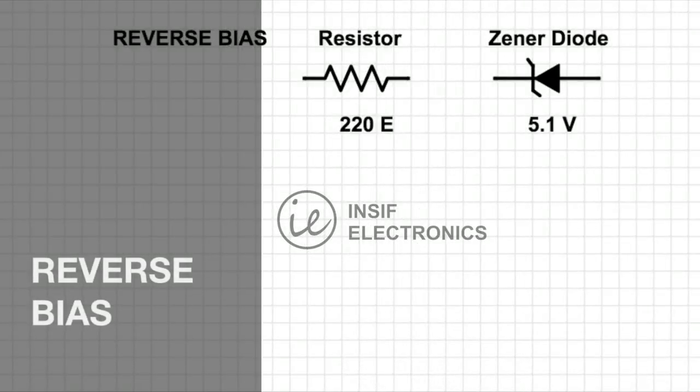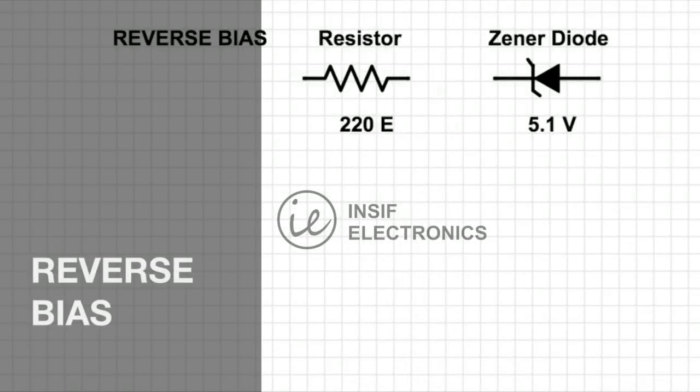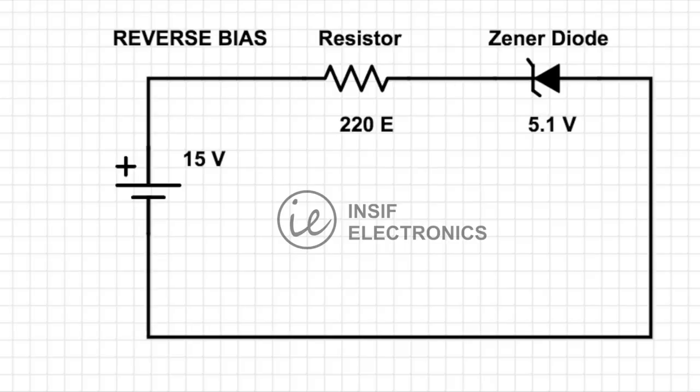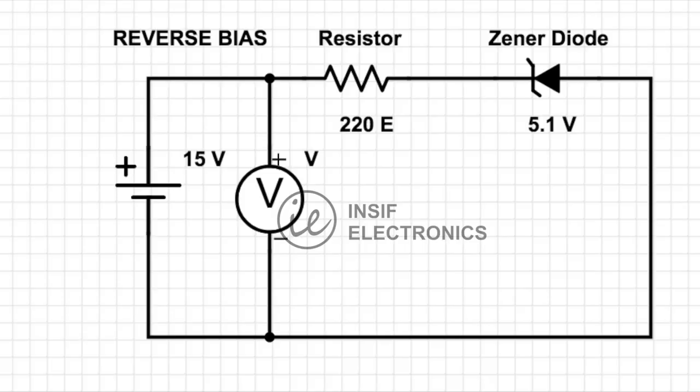Now see how to do connections in reverse bias. Connect the Zener diode with a power supply with resistance in series, connecting it in reverse bias. Connect the anode to the negative of the supply and the positive to the cathode of the diode. To plot the graph, connect the voltmeter in parallel and ammeter in series as shown.